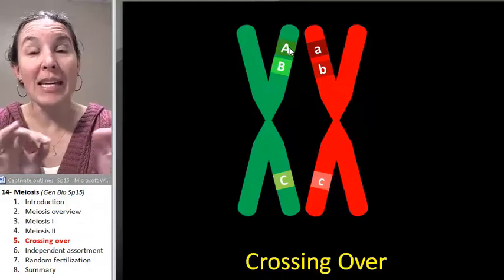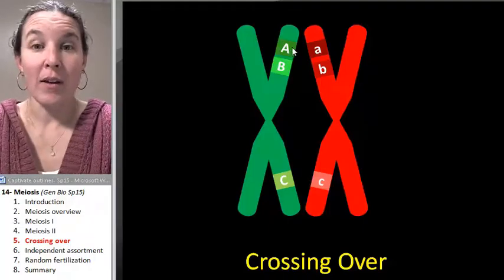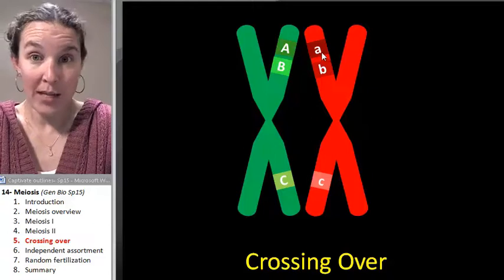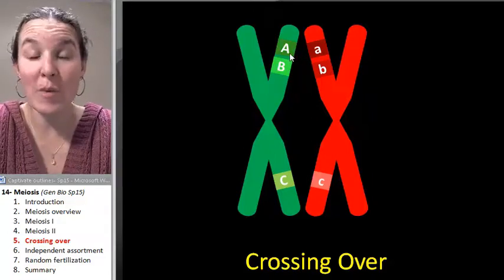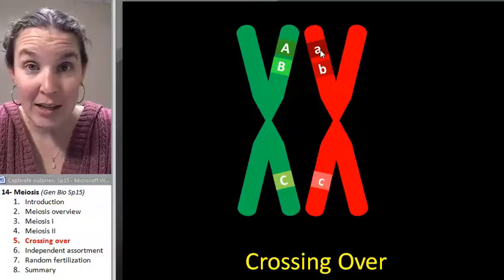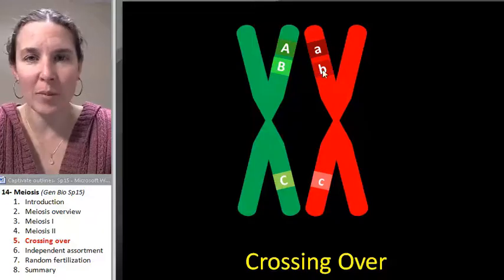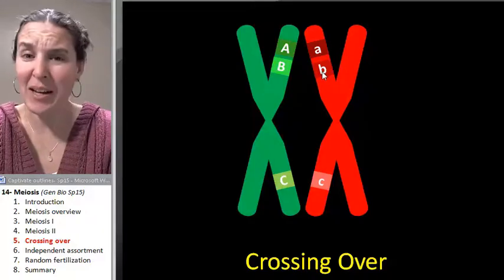So I've indicated the different alleles with capital letters or lowercase letters. That just means it's a different form of the same gene. So we could say, this is the A gene, and we've got big A and little a. Here's the B gene, and we've got big B and little b. Totally random.